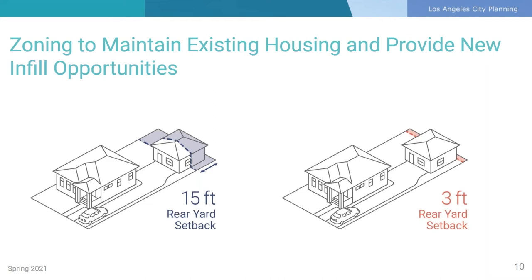This change in zoning regulations also allows for new units to be built where there is currently no structure at the rear of the property, which is an important tool to encourage gentle infill throughout the neighborhoods, allowing for multi-generational households to have more space, or allowing for additional rental income for a homeowner. This also allows for new units to be built on existing multi-unit properties without losing existing units to redevelopment, encouraging property owners to retain units subject to the rent stabilization ordinance and maintaining the more naturally occurring affordable housing stock in the plan area.